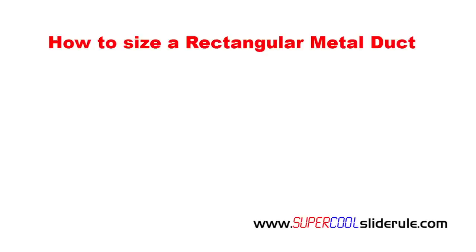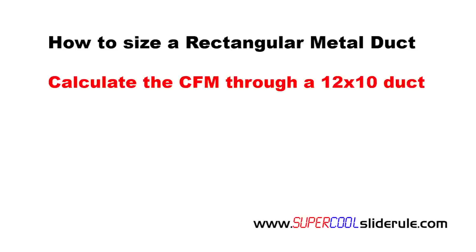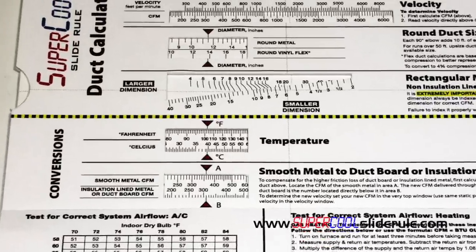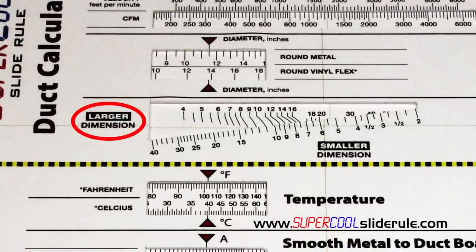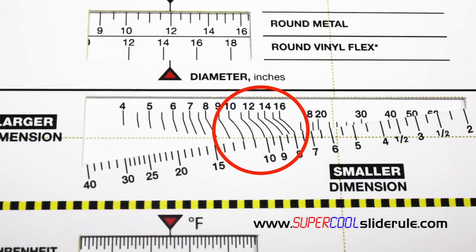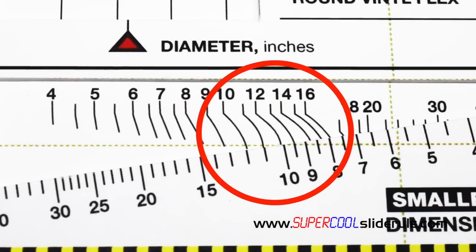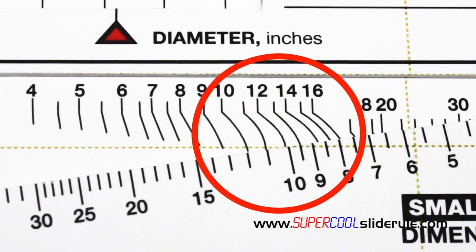There are many ways in which to use the duct calculator, but in this example we will calculate what the CFMs through a 12 by 10 duct will be. The most important thing to keep in mind is that the larger of the two dimensions will always be indexed over the small dimensions as seen here. So 12 is our larger dimension — it will be on top. We will then line up this line with the 10 like this.